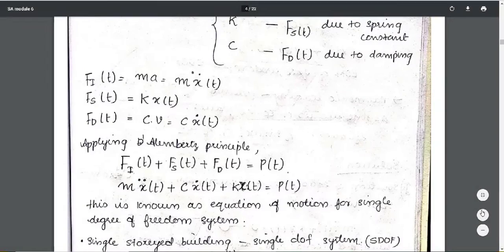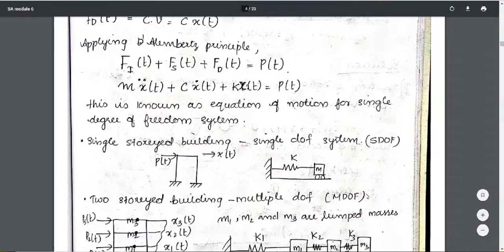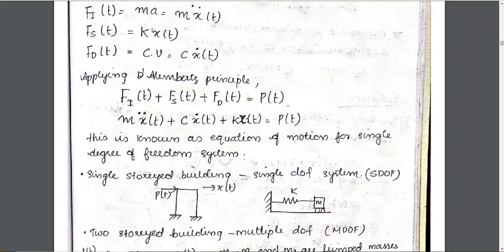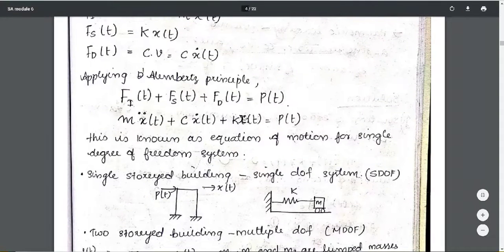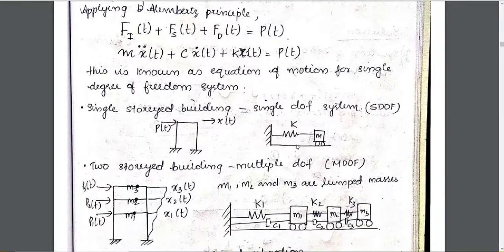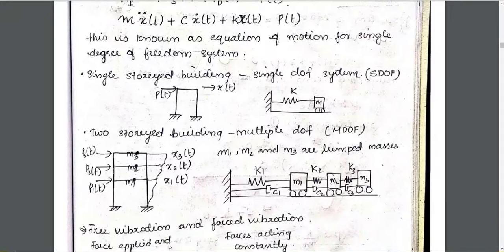Applying Newton's law — total internal forces equal external forces — we substitute these values. This gives us the well-known equation of motion for a single-degree-of-freedom (SDOF) system. A single-storey building corresponds to a single-degree-of-freedom system, and a two-storey system corresponds to two degrees of freedom.